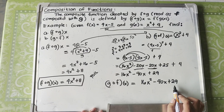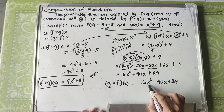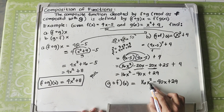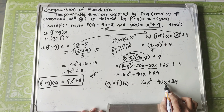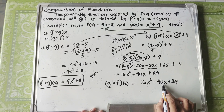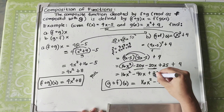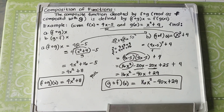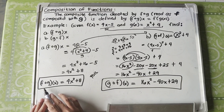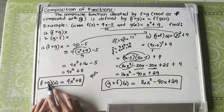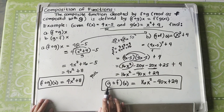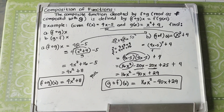We cannot combine these terms because they are not like terms — 16X squared has exponent 2 and negative 40X has exponent 1. Comparing the two results: F composed with G equals 4X squared plus 11, and G composed with F equals 16X squared minus 40X plus 29 — they are not the same, confirming that the order of composition matters.